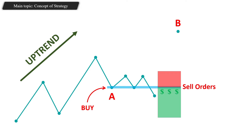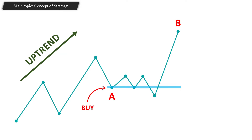Many traders enter short positions thinking the market will reverse. Then market makers jump in, grab all the liquidity they need, and push the market to the upside. When price gets back to the consolidation area, it gives us a buying opportunity. We enter a buy position with our stop loss protected below that level and target the next level of structure.